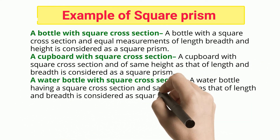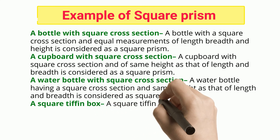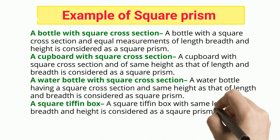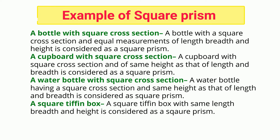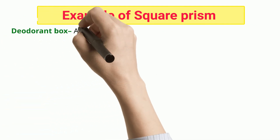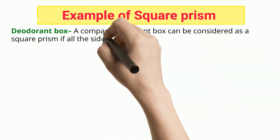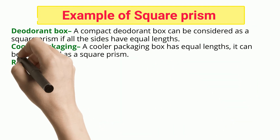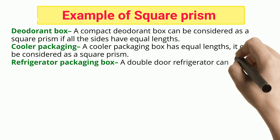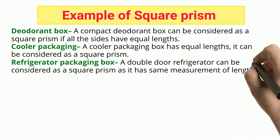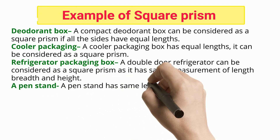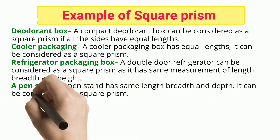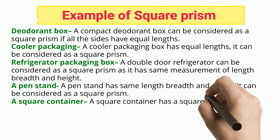A water bottle or cooler packaging box with equal lengths can be considered as a square prism. Refrigerator packaging box: a double-door refrigerator can be considered as a square prism as it has the same measurement of length, breadth, and height.